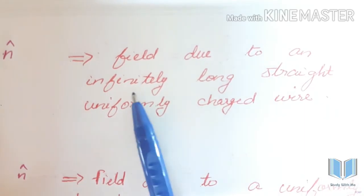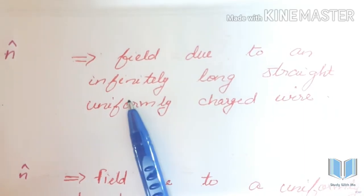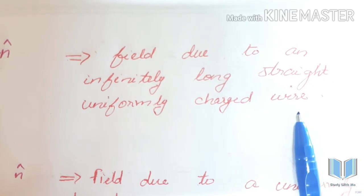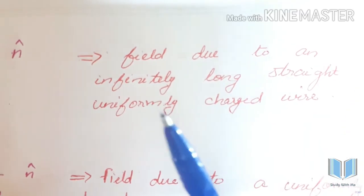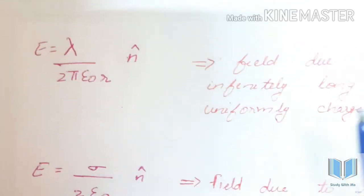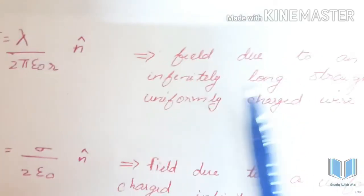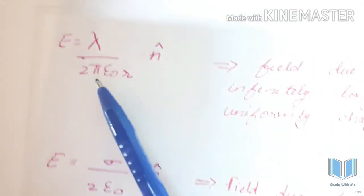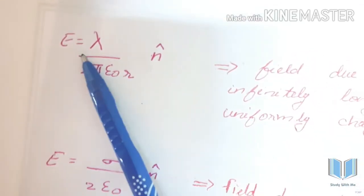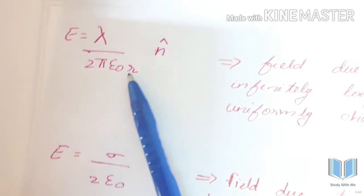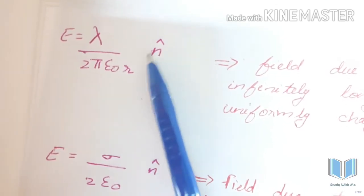Application of Gauss's Law: field due to an infinitely long, straight, uniformly charged wire. The equation is E equal to lambda by 2πε₀ r into n-hat.